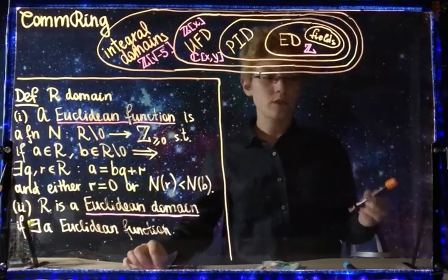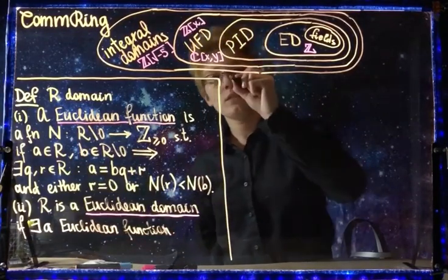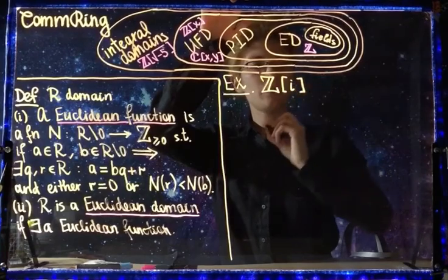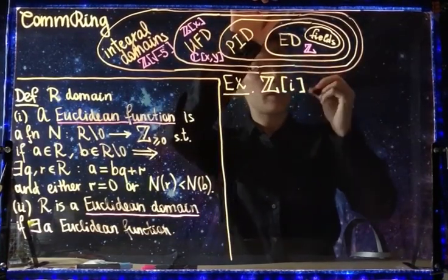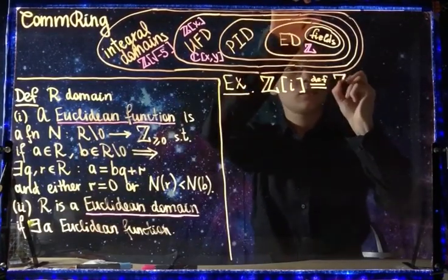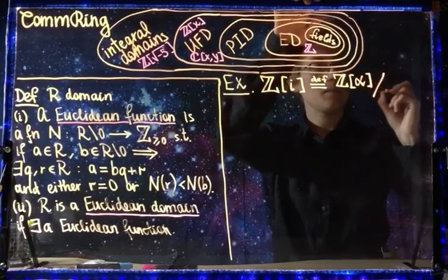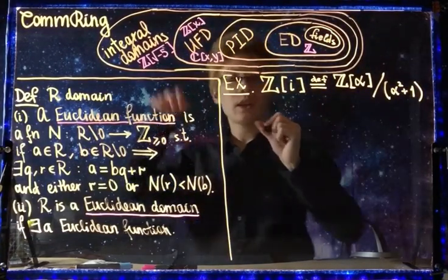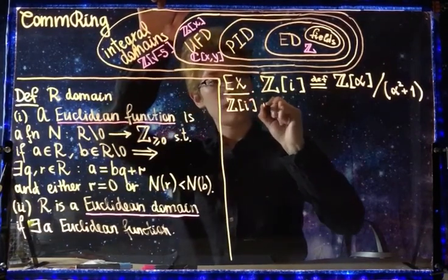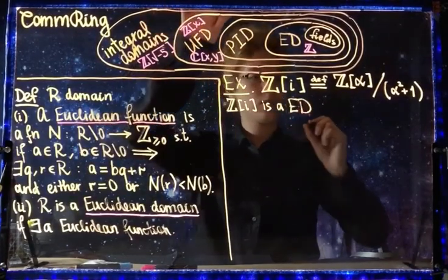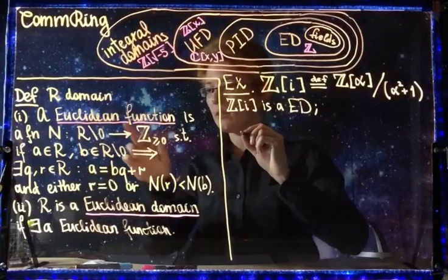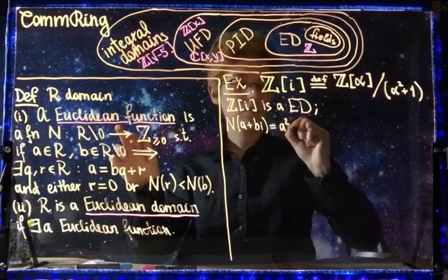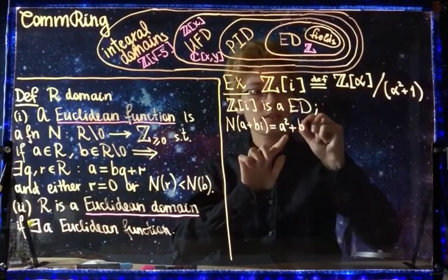Today I want to give another example of a Euclidean domain. I consider the ring of integers adjoined i, Z[i]. By definition, this adjoins an element α such that α² + 1 = 0. I claim that Z[i] is a Euclidean domain with Euclidean function n(a + bi) defined as a² + b².